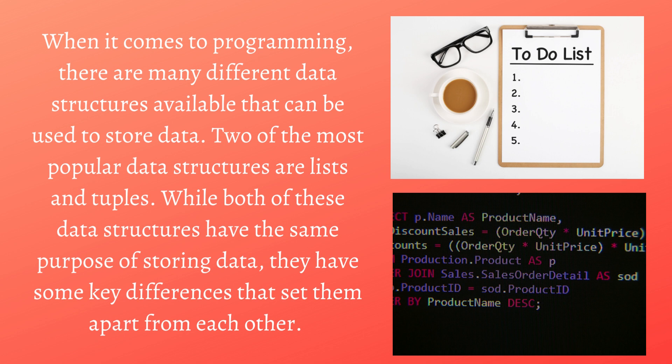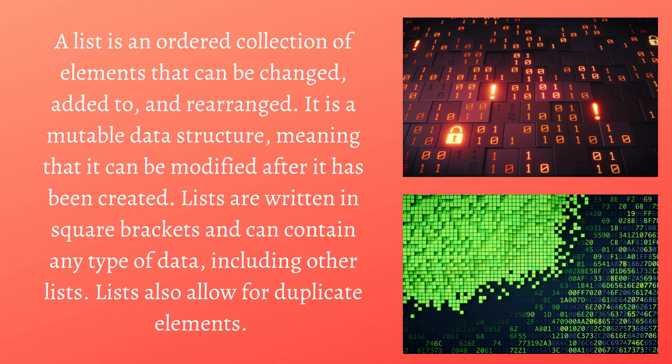A list is an ordered collection of elements that can be changed, added to, and rearranged. It is a mutable data structure, meaning that it can be modified after it has been created. Lists are written in square brackets and can contain any type of data, including other lists. Lists also allow for duplicate elements.